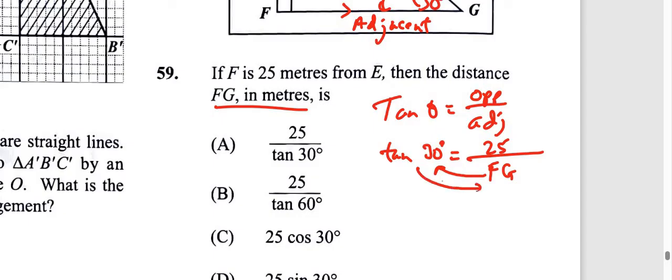So FG is equal to 25 over tan 30. That will be what you're looking for: 25 over tan 30, which is A.